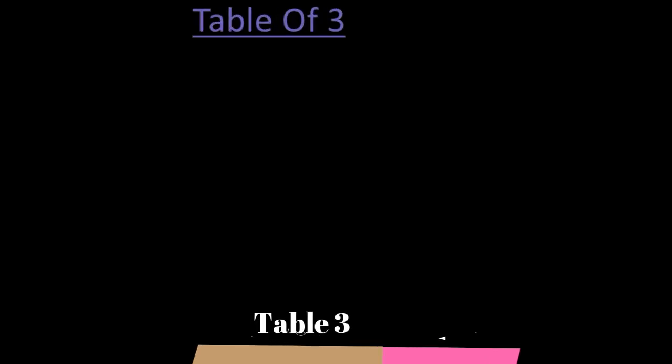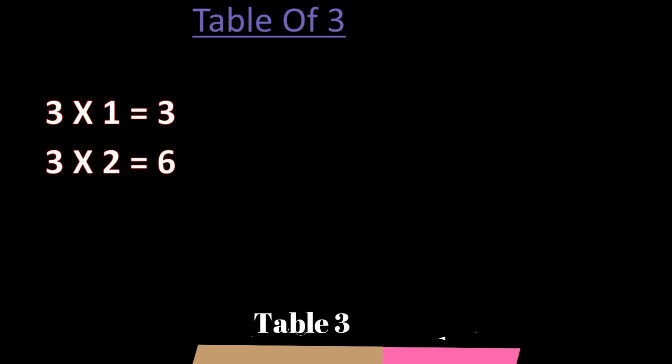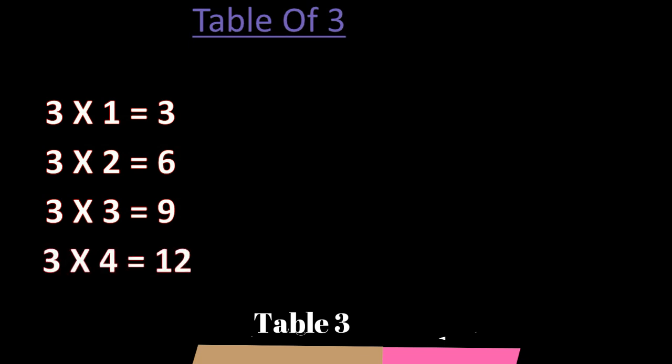Next table. 3 ones are 3. 3 twos are 6. 3 threes are 9. 3 fours are 12. 3 fives are 15.